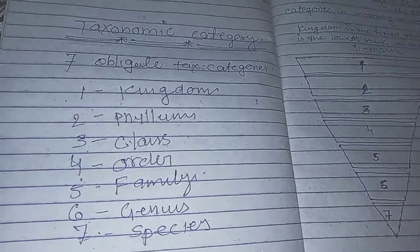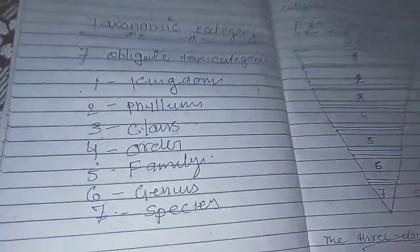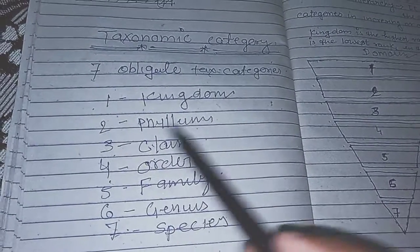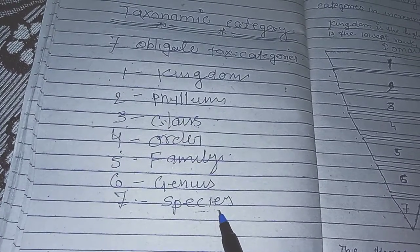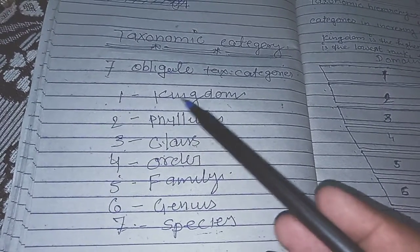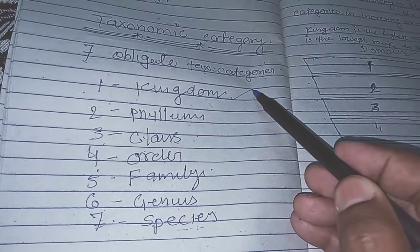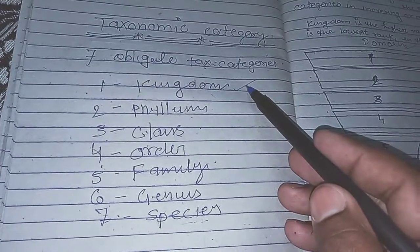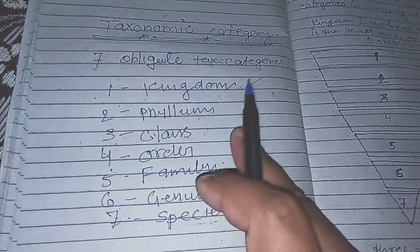In this video we will talk about taxonomic categories. There are seven obligate taxonomic categories: Kingdom, Phylum, Class, Order, Family, Genus, and Species. Kingdom is the highest rank and Species is the lowest rank.